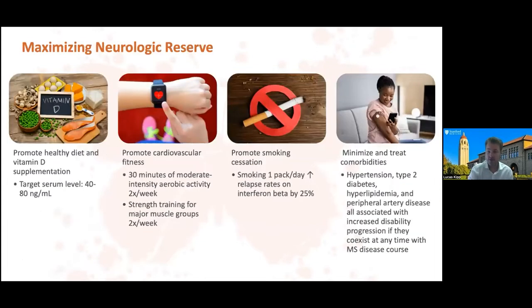As we talked about in lectures one and three, there are a number of modifiable risk factors in MS that any healthcare provider can counsel their patients on. I'd encourage you to incorporate these conversations into your regular visits. You can talk about promoting a healthy diet and vitamin D supplementation, promoting cardiovascular fitness, and smoking cessation — smoking while having MS increases the risk of relapse by up to 25%. If you're a primary care physician, you're already treating their medical comorbidities, particularly vascular risk factors. Knowing that these factors are also potentially increasing disability progression in MS may help counsel patients to take more ownership of keeping these comorbidities in check.